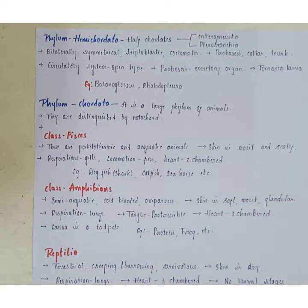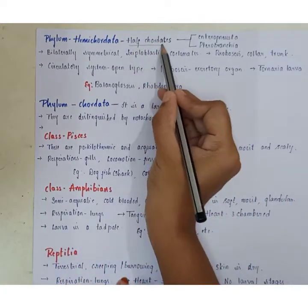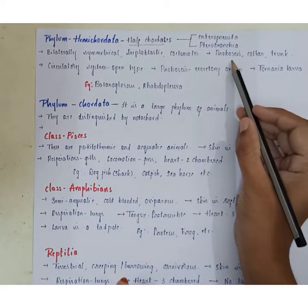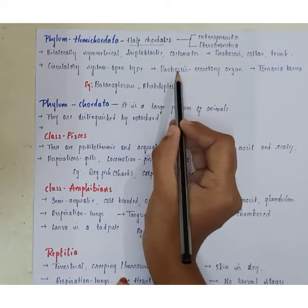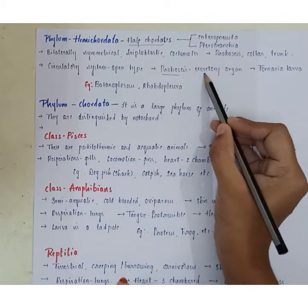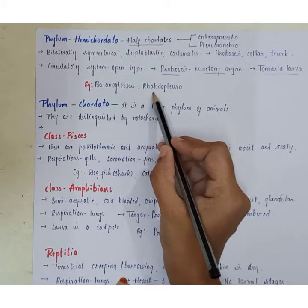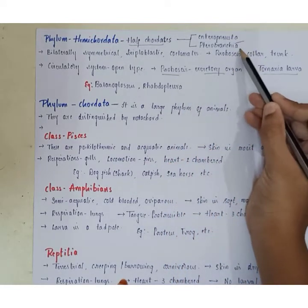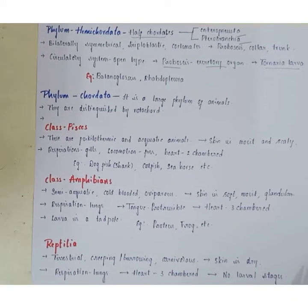Phylum Hemichordata — 'hemi' means half and 'chordata' means chordates, so these are called half-chordates. They are bilaterally symmetrical, triploblastic coelomates. They possess a proboscis, collar, and trunk. The circulatory system is open type. The proboscis acts as an excretory organ. The larval form is called tornaria larva. Examples include Balanoglossus and Rhabdopleura. Further classified into Enteropneusta and Pterobranchia.